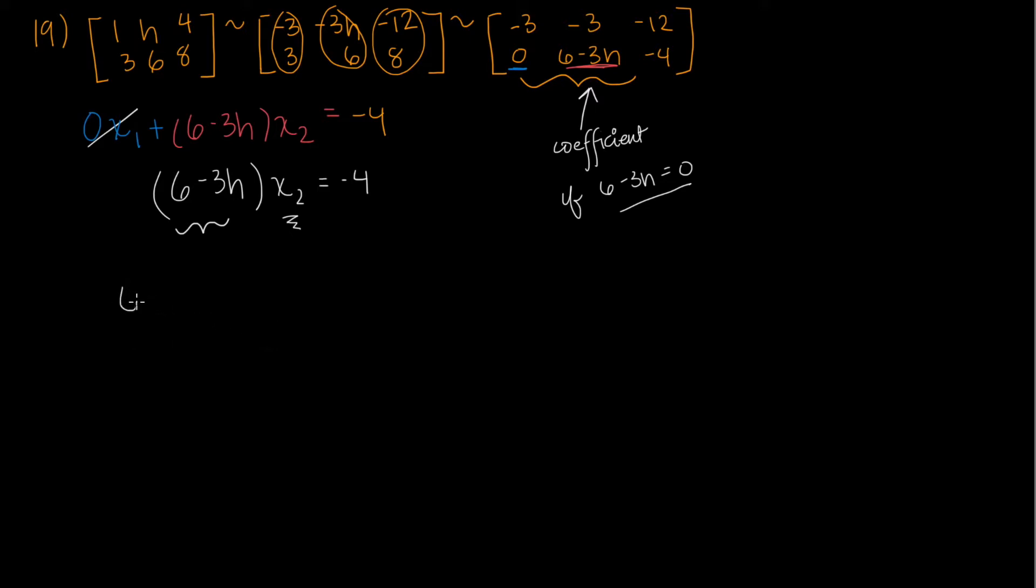So we want to make sure that six minus three h does not equal zero. What we can do, we can just set six minus three h not equal to zero. Then we can add three h to both sides. What we get is h doesn't equal negative two. And that's your answer for this problem.